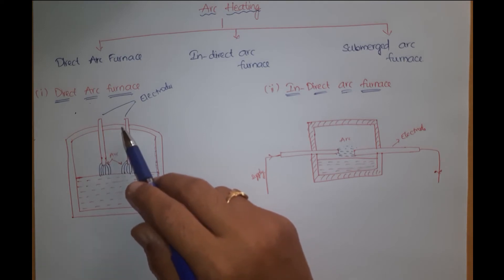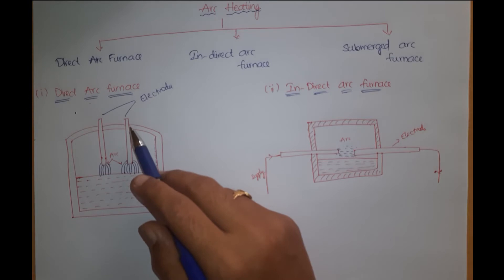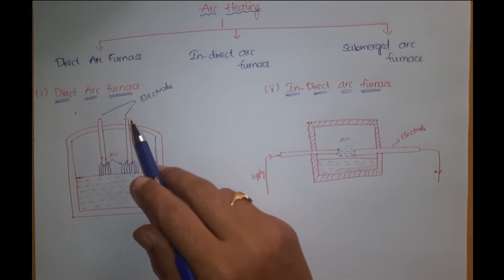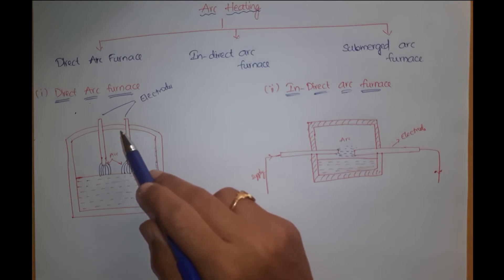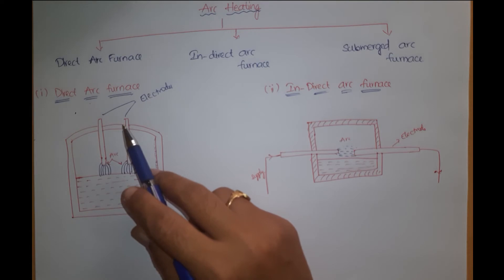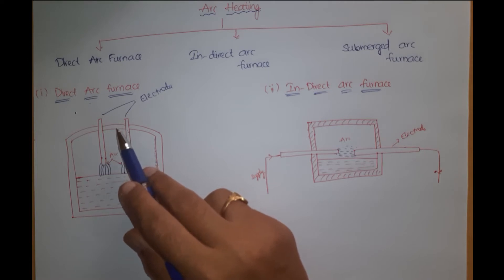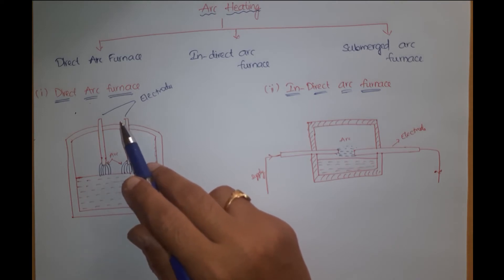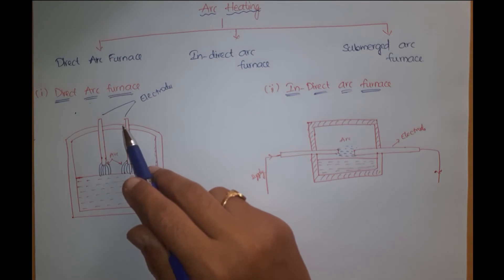The furnace consists of chambers to insert the electrodes, which may be constructed with either graphite or amorphous carbon. The conductivity of graphite is double that of carbon, and it can carry two and a half times the current that can be carried by carbon. Although graphite is costlier, graphite electrodes are usually employed because the diameter of a graphite electrode required is only about two-thirds that of a carbon electrode to produce the same amount of heat.